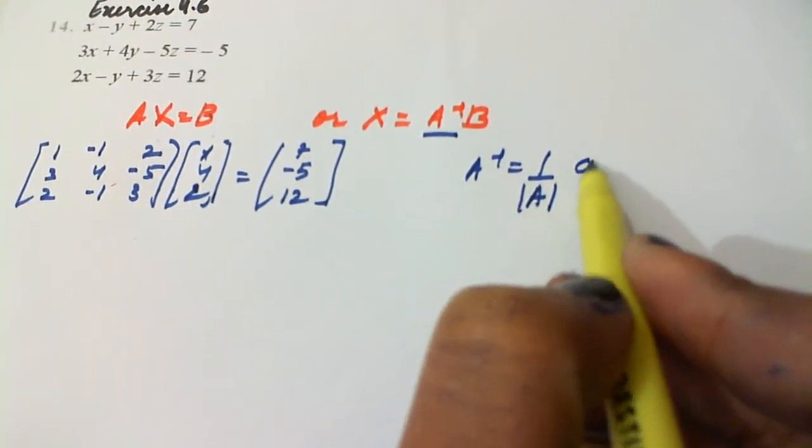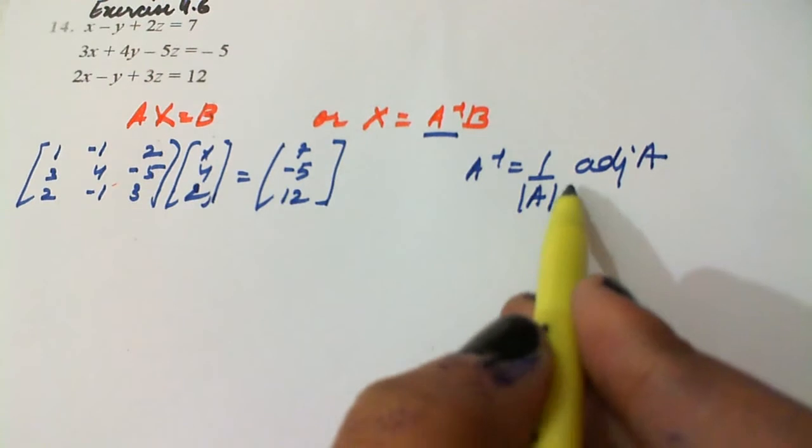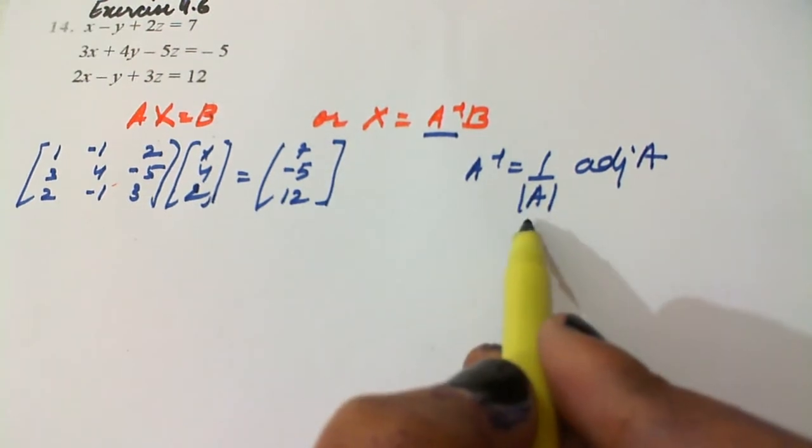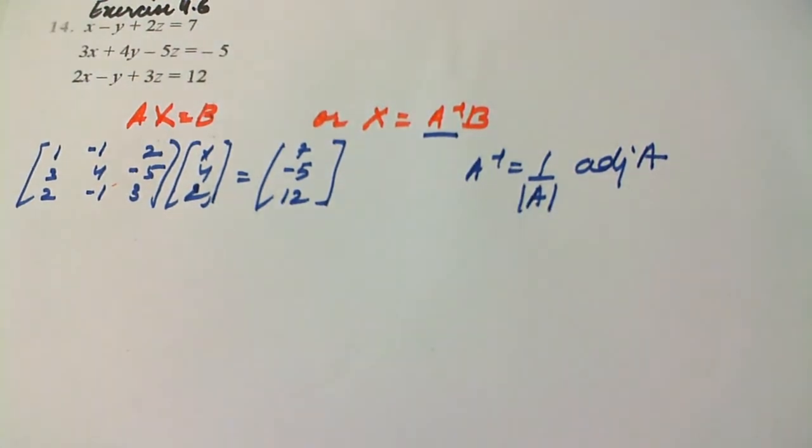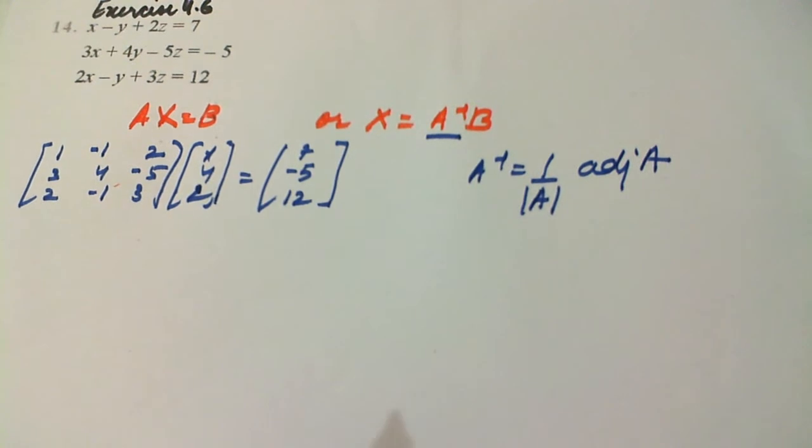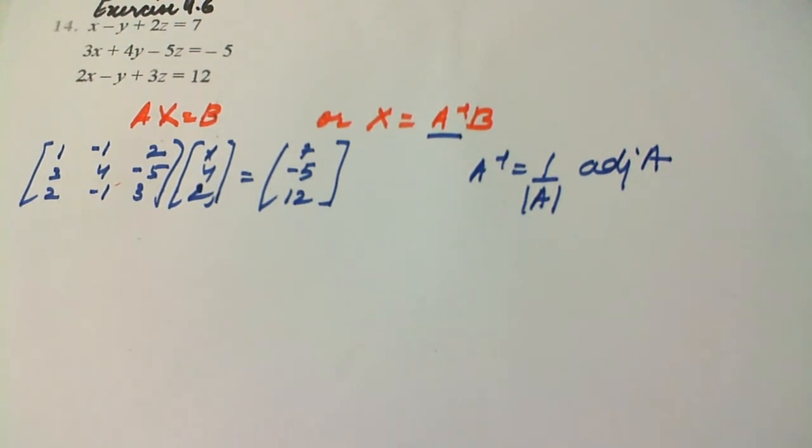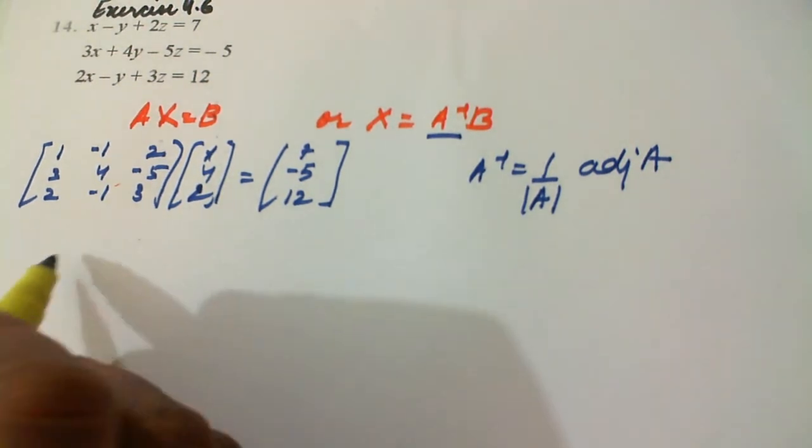The first thing we will do is find determinant of A, so that in case determinant A is equal to 0, the solution does not exist, that is the system is inconsistent.